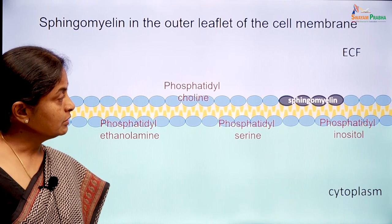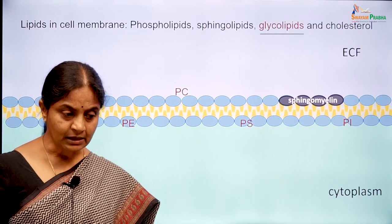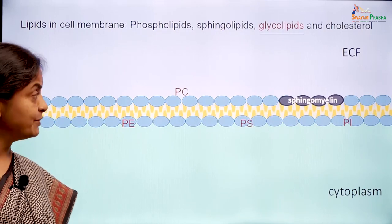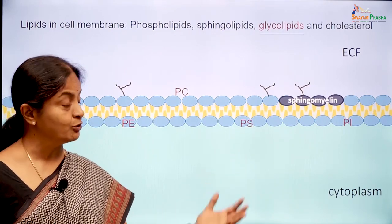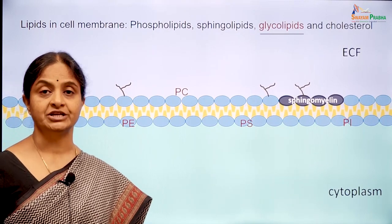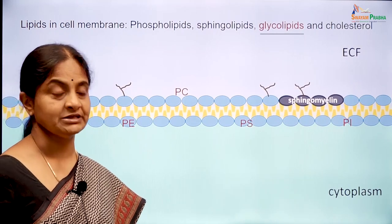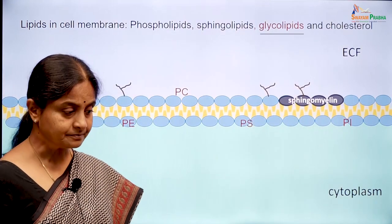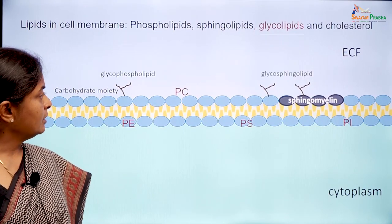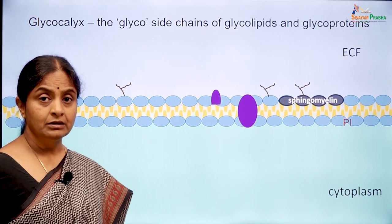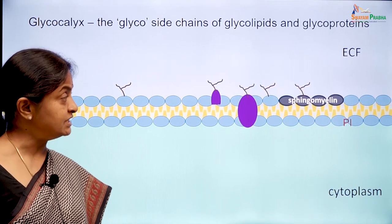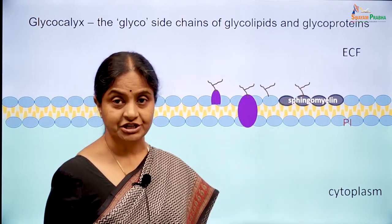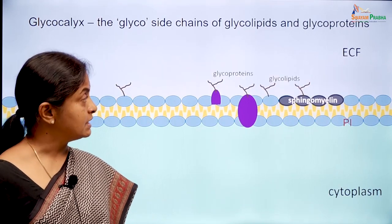Glycolipids are not a special entity different from what we have just considered. The lipids on the outer leaflet of the cell membrane — phosphatidylcholine and sphingomyelin — some of them have carbohydrate side chains attached to them, and we refer to these as glycolipids, either glycophospholipids or glycosphingolipids. Not only the lipids in the outer leaflet but also cell membrane proteins can have glycoside chains, and we refer to the glycoside chains of glycolipids and glycoproteins together as a glycocalyx.